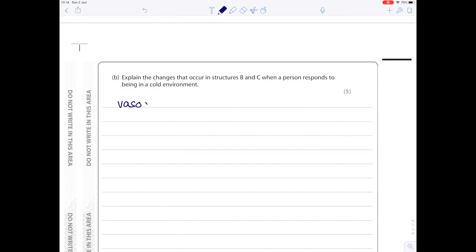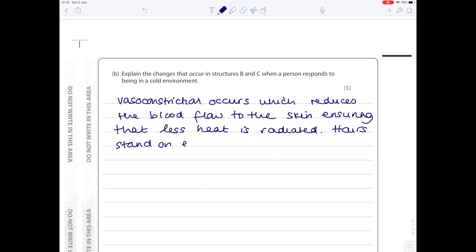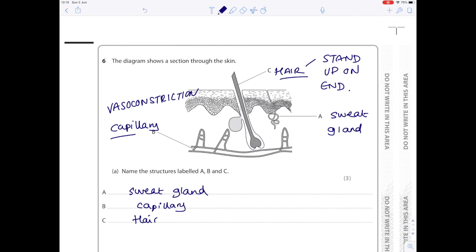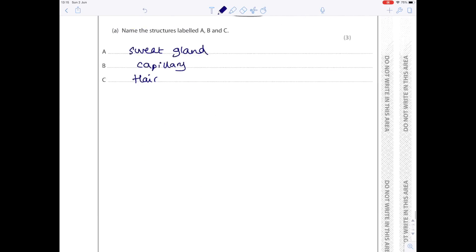So we're going to explain all of that now. Vasoconstriction occurs which reduces the blood flow to the skin ensuring that less heat is radiated. The hairs stand on end to trap more insulating air close to the skin to prevent heat loss. Don't be tempted to write about shivering. I know it is tempting but we haven't been asked about the muscle, we've only been asked about C and B so there'd be no point talking about it here.